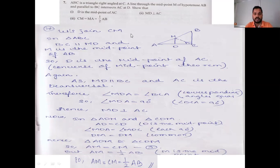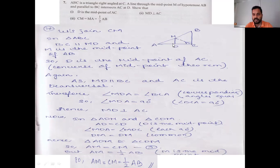Second, show MD is perpendicular to AC. Since BC is parallel to MD and angle C is 90 degrees, by corresponding angles angle MDA equals 90 degrees. So MD is perpendicular to AC.